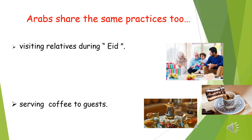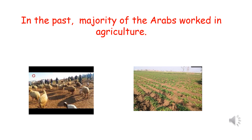Arabs have many things in common: they share the same language, they have the same past, and there are many practices that are common among them. For example, visiting their family members or relatives during Eid, and serving coffee to their guests. An example of the same past would be that the majority of Arabs worked in fields — they did agriculture and farming, herded animals, and most of them were nomads.